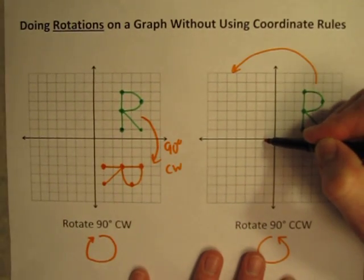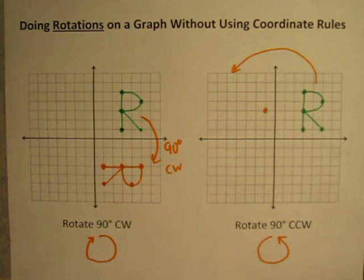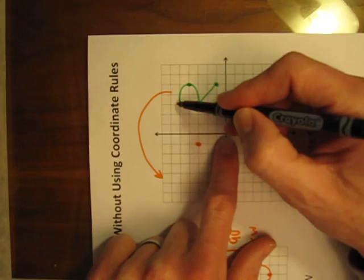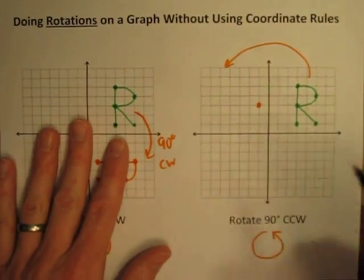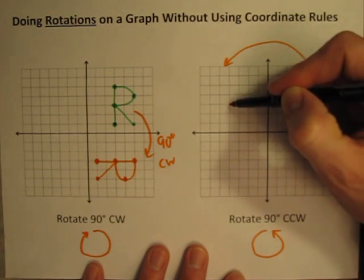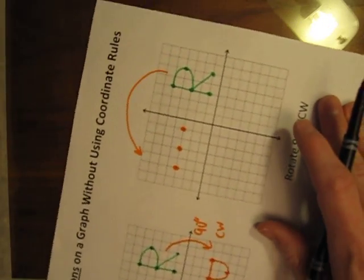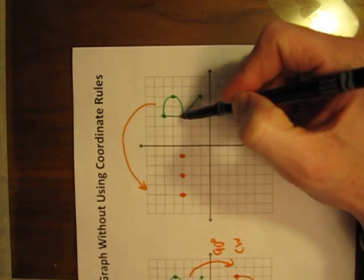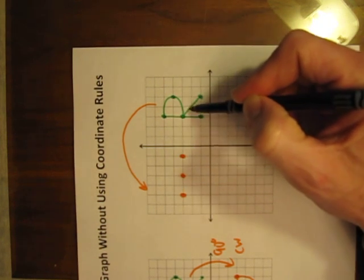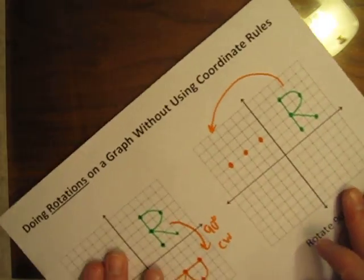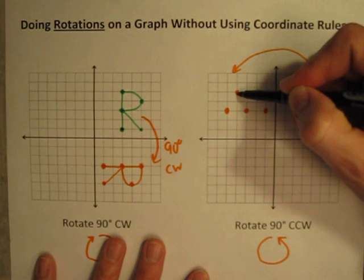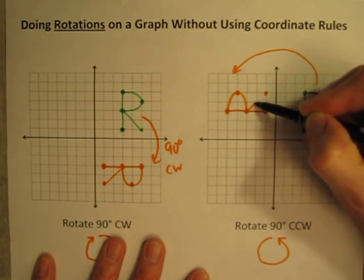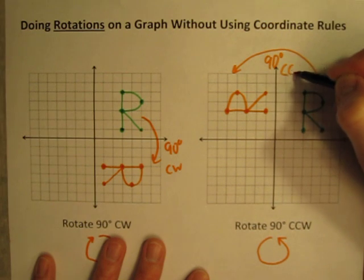Turn the paper back, start at the origin, one to the left, 1, 2, 3 up — and there's that point. Where are the others? Turn it back again: from here we go 1, 2 to the left, then 1, 2 more to the left, putting dots there and there. So we go here, go 1, 2 to the left — put a dot — then 2 more to the left — put a dot. This point here is halfway in between those two and up two, and this one goes diagonally across two squares up. So go between those two, up to there, and then go diagonally across two squares. Connect everything with lines, and there is our letter R after a 90 degrees counterclockwise rotation.